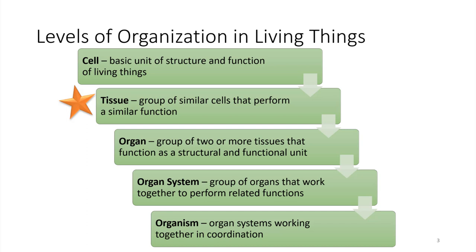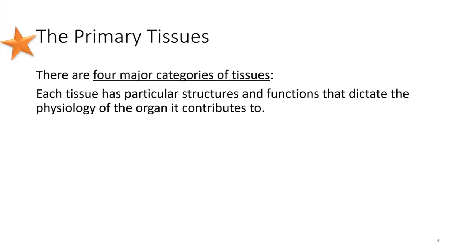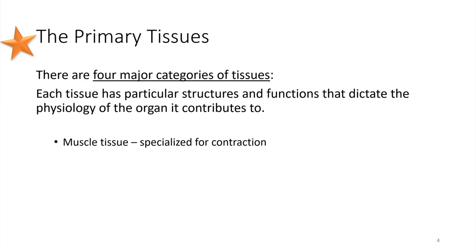There are four primary types of tissues that exist in animal bodies, and each of these different tissue types has a specific structure and consequently a function that it's able to carry out or contribute to the living thing. We're going to be going through these one at a time — let's just list them out to get started.